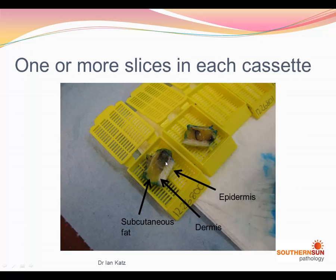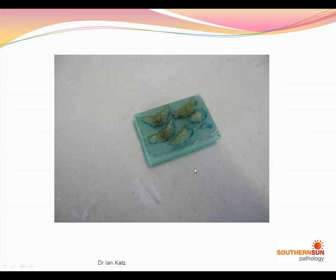There's the epidermis, the dermis, and the subcutaneous fat. And this is what happens once the specimen has been processed and then embedded in wax.